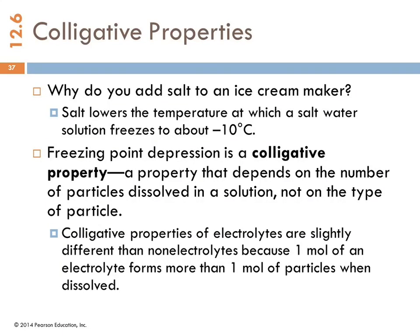Now we're going to talk about colligative properties. If you've ever made ice cream at home the old-fashioned way, you know that you put ice in the bucket and you have to put salt on the ice. Why do we use salt in the ice cream maker? Because the salt makes the ice colder. Salt lowers the temperature at which the solution freezes, and you can get it down to about minus 10 degrees Celsius.